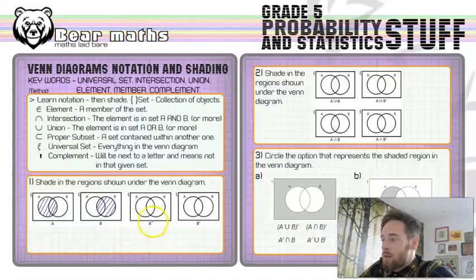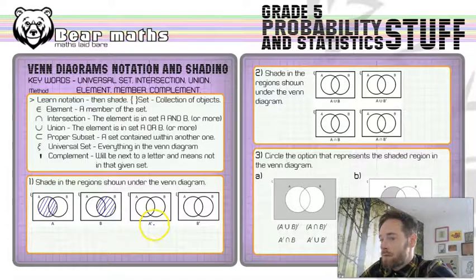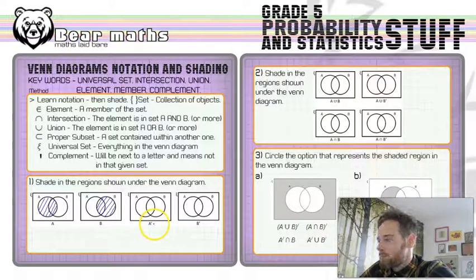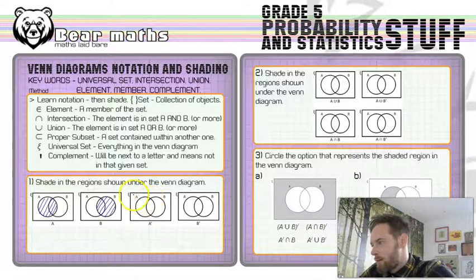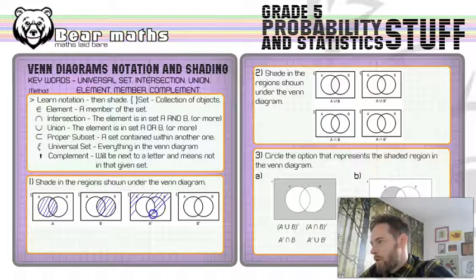Then we've got A with a little dash, which means the complement of A. So, basically not A. What's not A? Well, everything that's not A is everything that's outside of A. So, just don't shade A in. Shade everything else in, but not A. We can go over B here, but don't go over A. Just leave A alone.